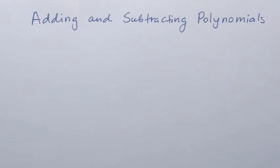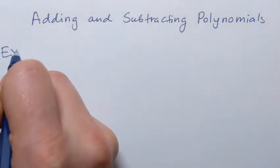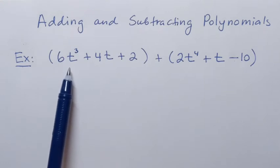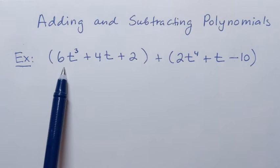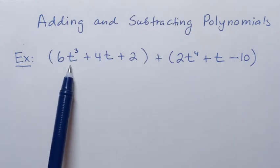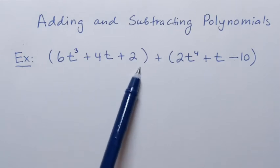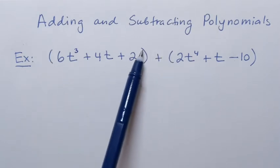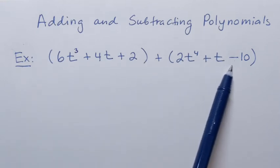In this video we're going to see how to add and subtract polynomials. Let's start with addition. In this example we will need to add two polynomials. As you can see, we're adding two trinomials. This is the first polynomial — it has three terms and it's called a trinomial. The polynomials are enclosed in parentheses and we're adding one more trinomial.